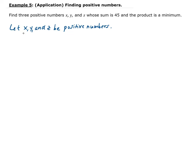So the minimum — we want to let M be the product. So M equals x times y times z. This is what we want to minimize, and that is our primary equation.